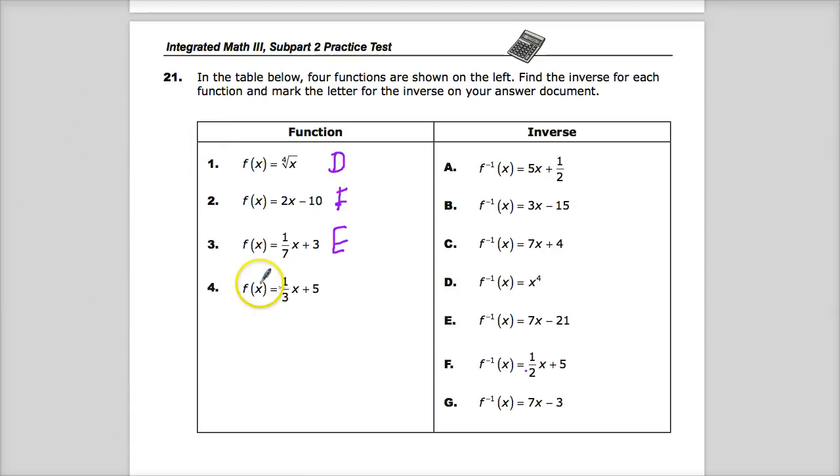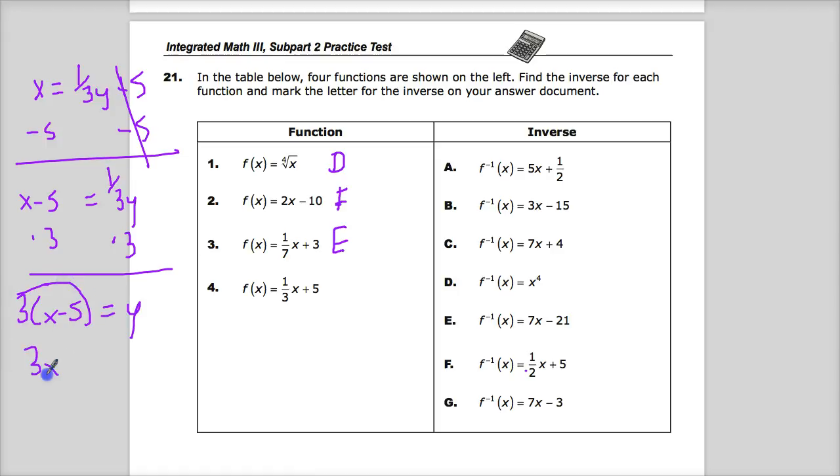And for the other one, I'm not even going to write the original one. I'm going to go ahead and change it to this, just to save time since we've already talked about this process. Times 3 on both sides - 3x minus 15 equals y. So B.